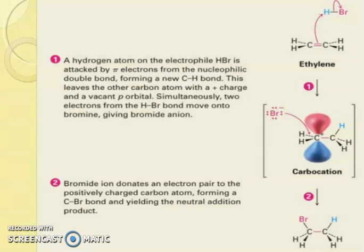So look at these reactions. Here a hydrogen atom on the electrophile HBr is attacked by pi electrons from the nucleophile double bond. The formation of new C-H bond leaves the other carbon atom with a positive charge and a vacant p-orbital. Simultaneously, two electrons from the H-Br bond move onto the bromine giving bromide anion. You can see the bromide. And bromide ion donates an electron pair to the positively charged carbon atom forming a C-Br bond and yielding the neutral addition product. This is the bromide ion.